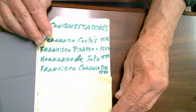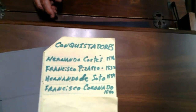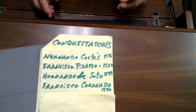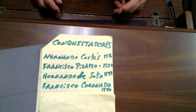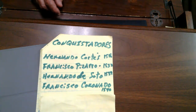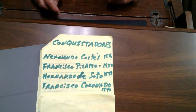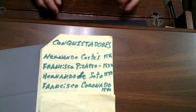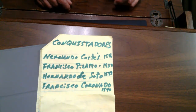Another conquistador was Francisco Coronado, who made an attempt to open the Southwest and find gold and riches in the area of Arizona, New Mexico, and even as far as Kansas. He was able to visualize the Grand Canyon but found no gold and no silver. That was in the years 1540 to 1544.